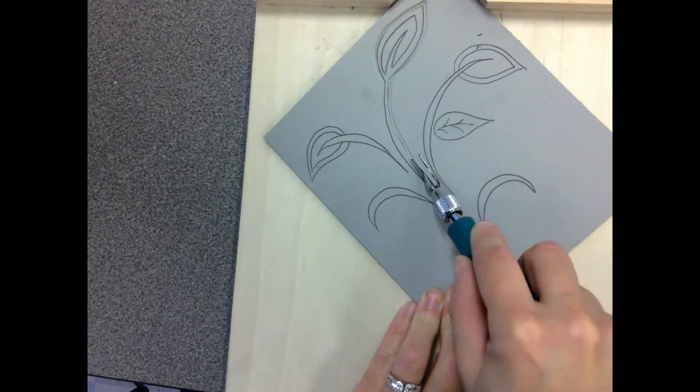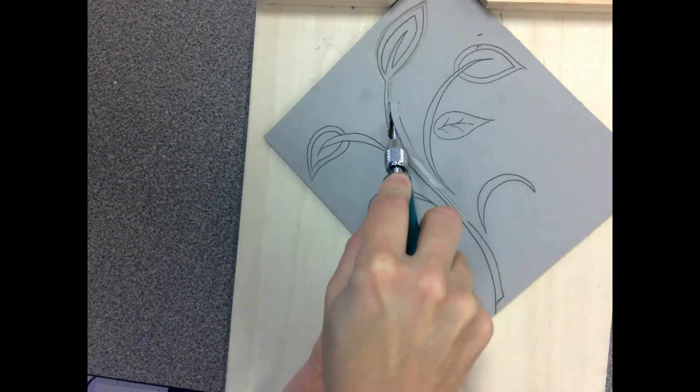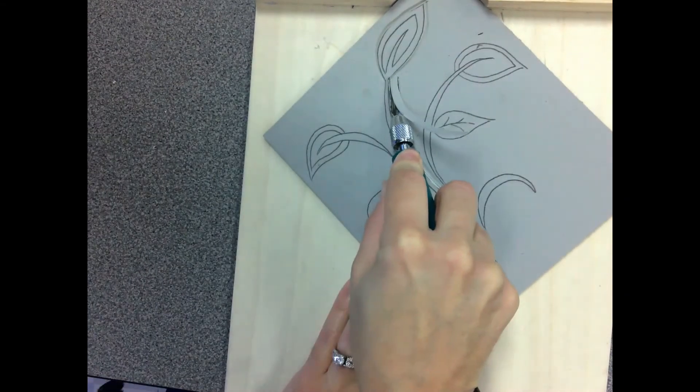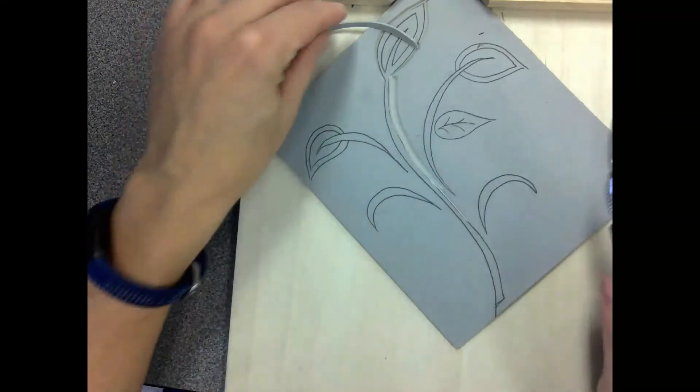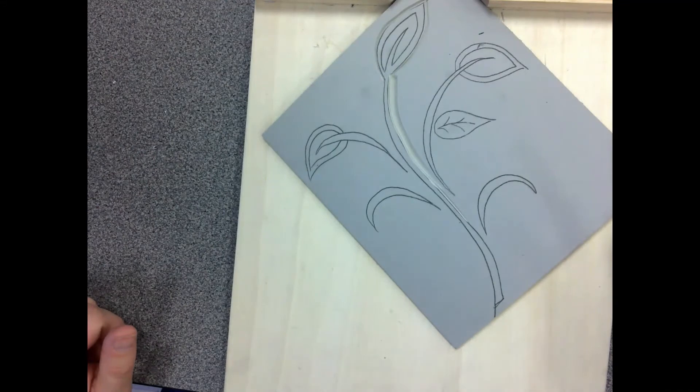Now I can start taking up bigger chunks and making a little bit more progress at removing that negative space. So anything that I don't want to print, I am lifting up or carving out and remember if it's gone, it's gone. We can't put this back on. It's kind of like a haircut.